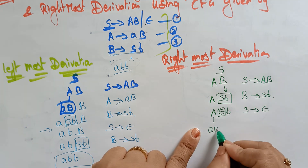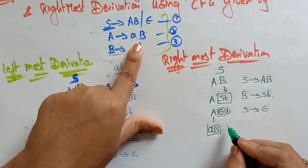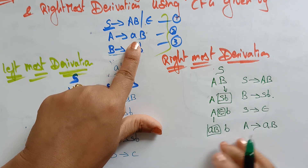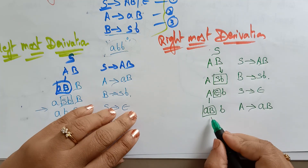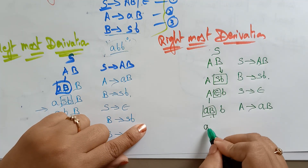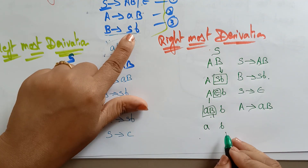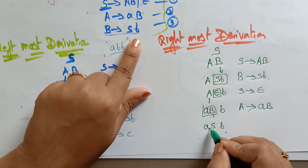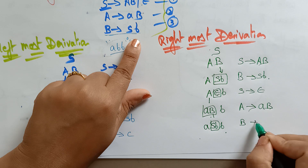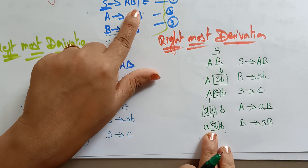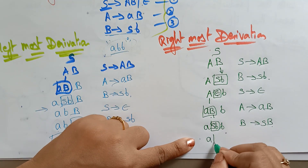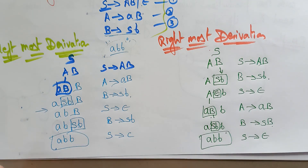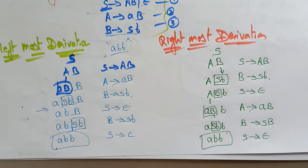In place of A, I replaced with 'ab', and the remaining non-terminal is B. I still need to get 'abb'. B can be replaced with SB. In place of S, I keep epsilon, so I get the string 'abb'. S is replaced with epsilon and I get my string 'abb'.